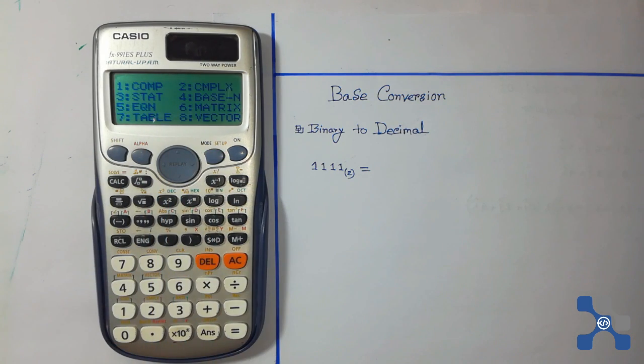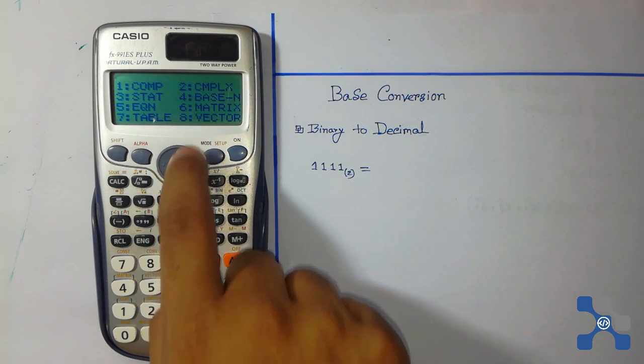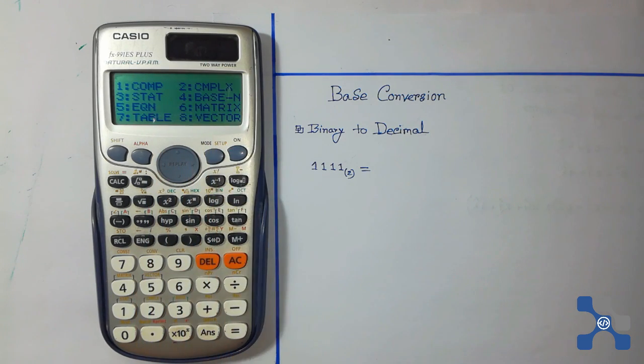mode button. We see that here is 4, and 4 is for base conversion, so press 4. We see that